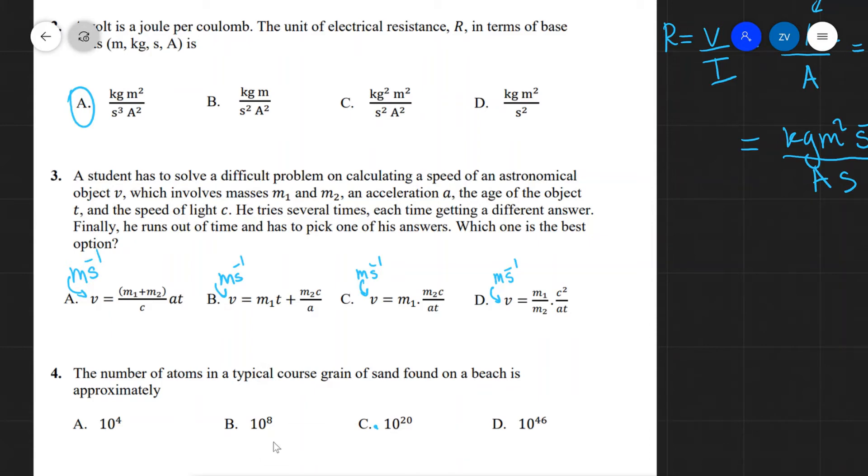So whatever all of these quantities add up to or multiply to, it has to be meters per second. We can immediately discount most of the answers.